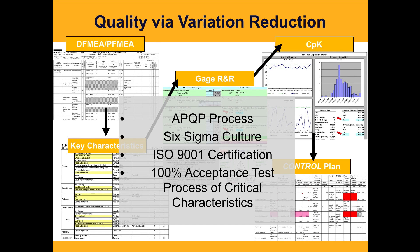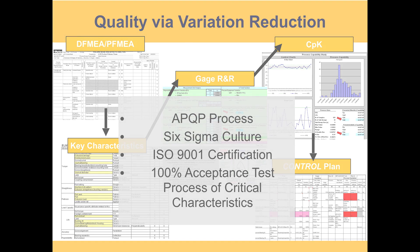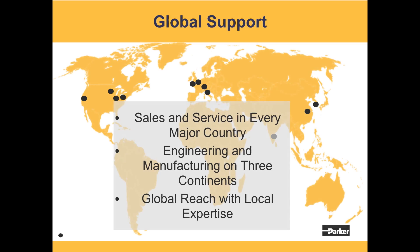We implement a variety of methods to maintain optimum quality through FMEA and PFMEA, key characteristics, gauge R&R, process capability indices, and finally a control plan. Lastly, Parker offers global support with manufacturing on four continents and sales and service centers in every major country.